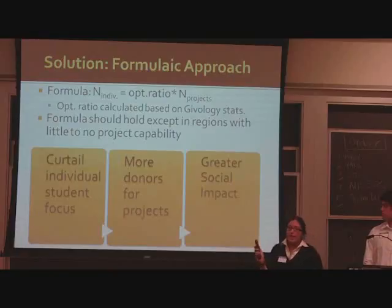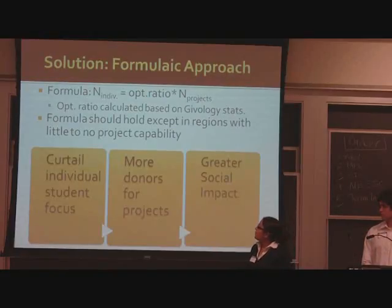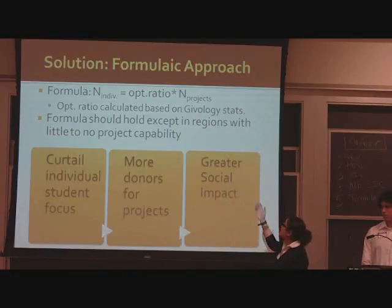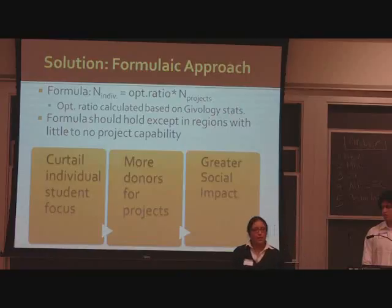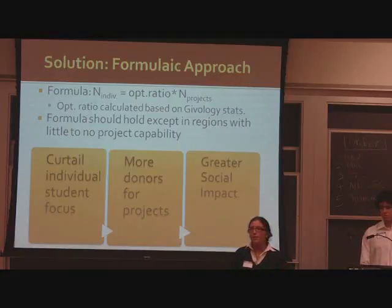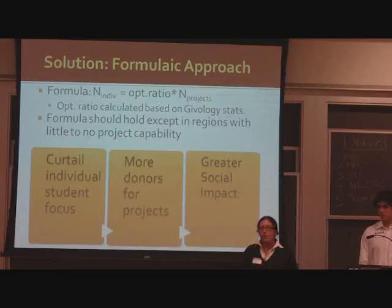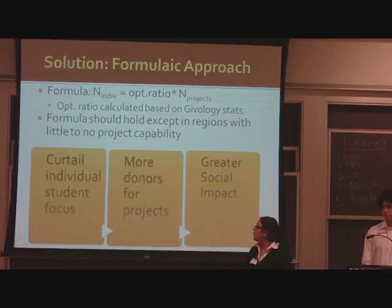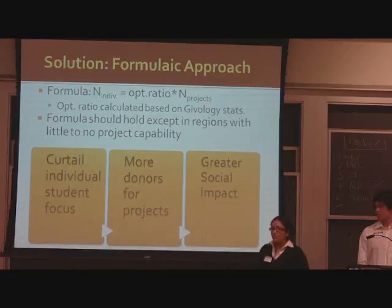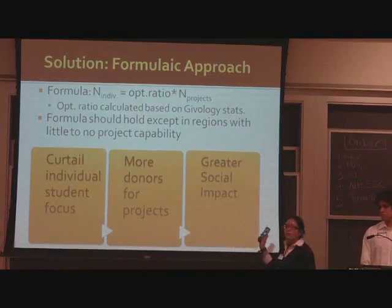The solution has a formulaic approach. The formula is that the number of individual students that should be helped equals an optimal ratio times the number of given projects. The optimal ratio would be determined by Evole's statistics once the organization has been in existence for a few more years. The formula should hold except in regions of limited project availability — if there are no projects currently available in a certain region, then the focus should be solely on individual students. This curtails the individual student focus, provides more donors for projects, and becomes a greater social impact.